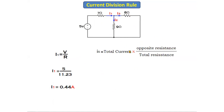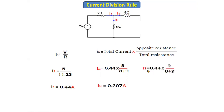Now we apply the current division rule formula to find i2 and i3. For i2: the opposite resistance of the 9-ohm resistor is 8 ohms, so i2 = 0.44 × 8 / (8 + 9) = 0.207 amperes. For i3: the opposite resistance of the 8-ohm resistor is 9 ohms, so i3 = 0.44 × 9 / (8 + 9) = 0.232 amperes. Note that in the formula, we only use the resistances where the current is dividing.